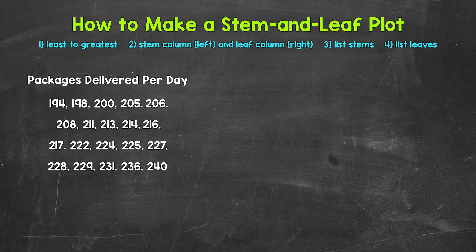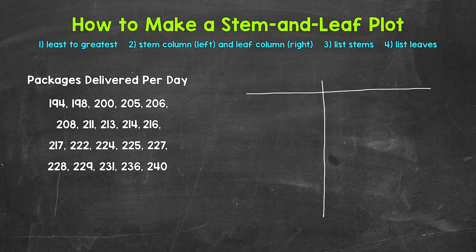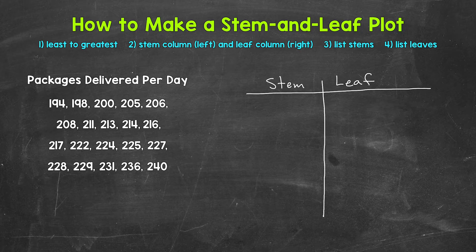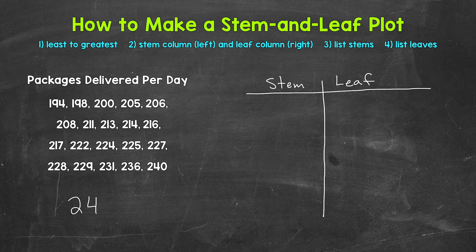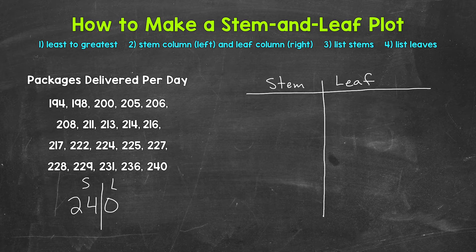Since everything is already in order, we can move on to creating the stem and leaf plot. We will start with a vertical line and then a horizontal line. The left column is the stem column, and the right column is the leaf column. Taking a look at the data, we have three-digit numbers that range from 194 to 240. With stem and leaf plots, we split each value into a stem and a leaf. The hundreds and tens digits are going to be the stems, and the ones digits are going to be the leaves.